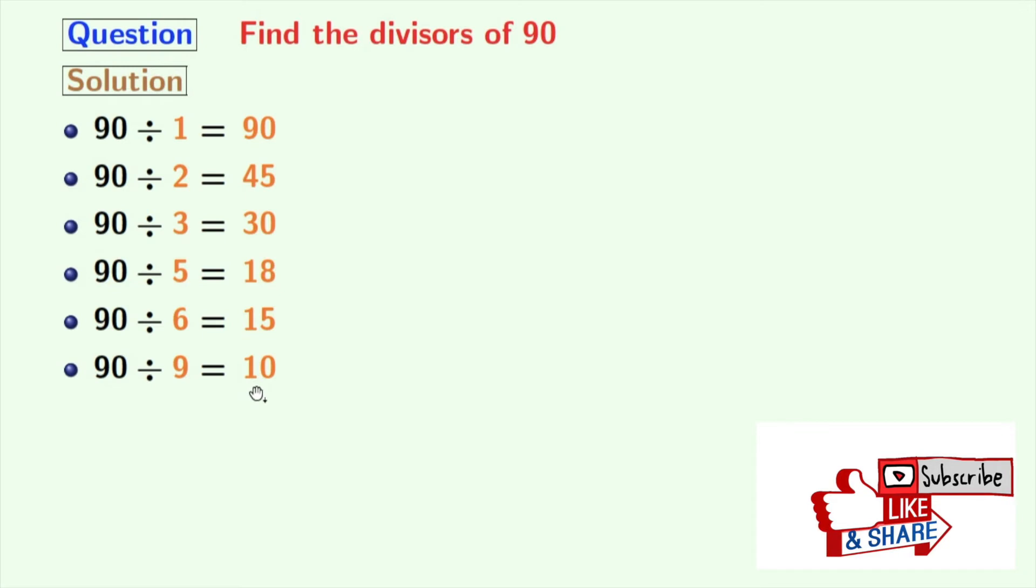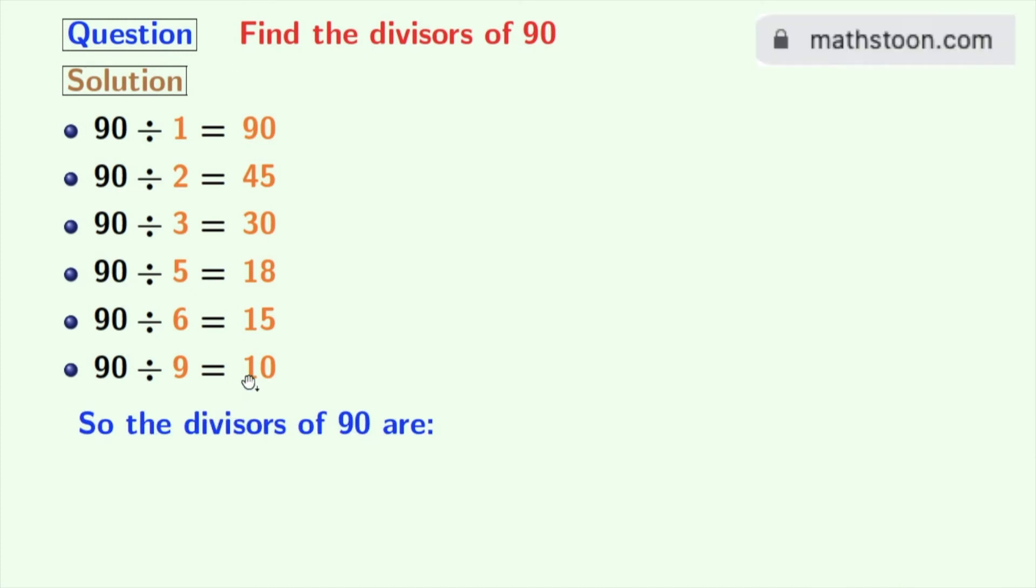Next number 10 is already here. So we will stop right now. Now we have all the divisors of 90 which are in orange colors.